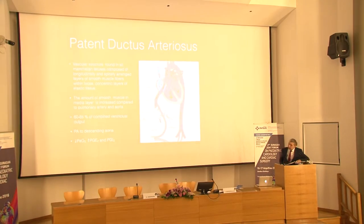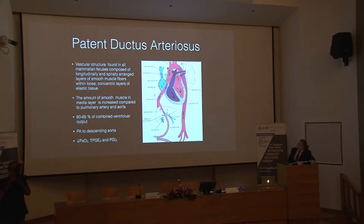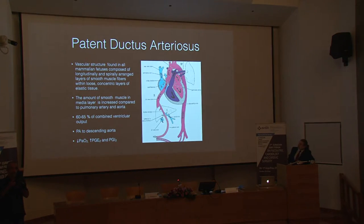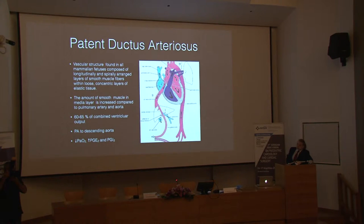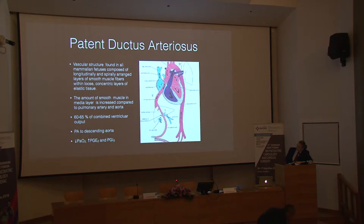Patent ductus arteriosus is a vessel structure found in all mammalian fetuses. It is composed of longitudinally and spirally arranged layers of smooth muscle fibers, which can lose concentric layers of elastic tissue, and the amount of smooth muscle in the media layer is increased compared to the neighboring pulmonary artery and aorta. Almost 65% of the combined ventricular output crosses from the PDA to the descending aorta. The PDA remains open because of the low partial oxygen concentration in the fetus and increased concentrations of PGE2 and PGI2, produced by the placenta.